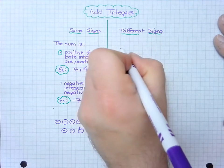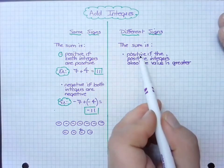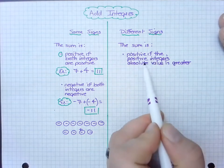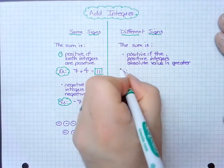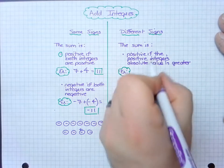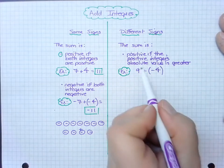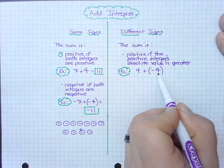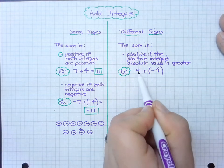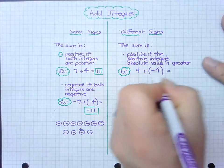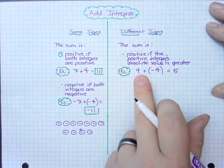Alright, so what happens if there are different signs? The sum is positive if the positive integer's absolute value is greater. So let's look at an example. If I have 9 plus negative 4. If I took the absolute value of 9, that would be 9. If I took the absolute value of negative 4, that would be 4. But the larger absolute value in this case is 9. Because it's positive, my answer is going to be positive. And so therefore I have to find the difference of these two, which is 9 and 4 gives you 5, and it's going to be positive because the larger number is positive.